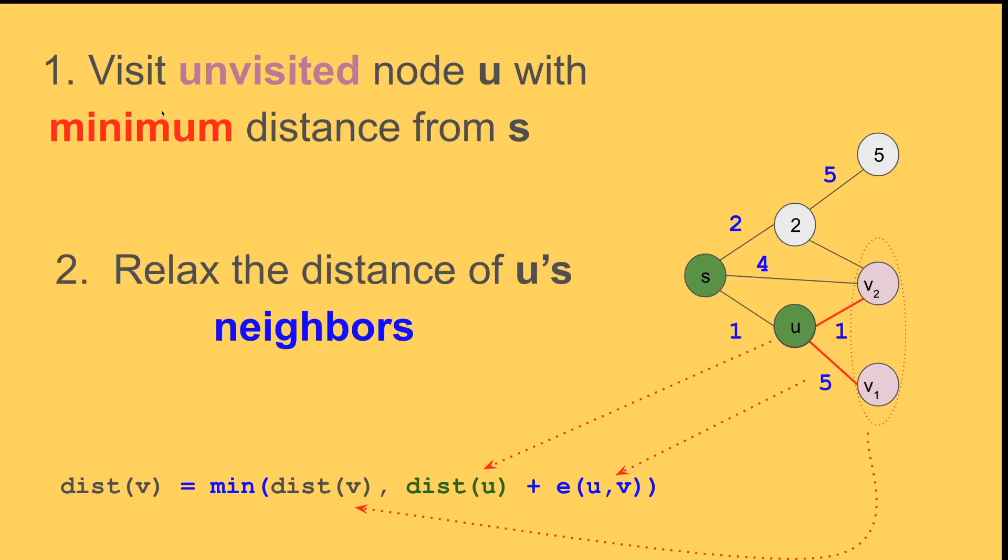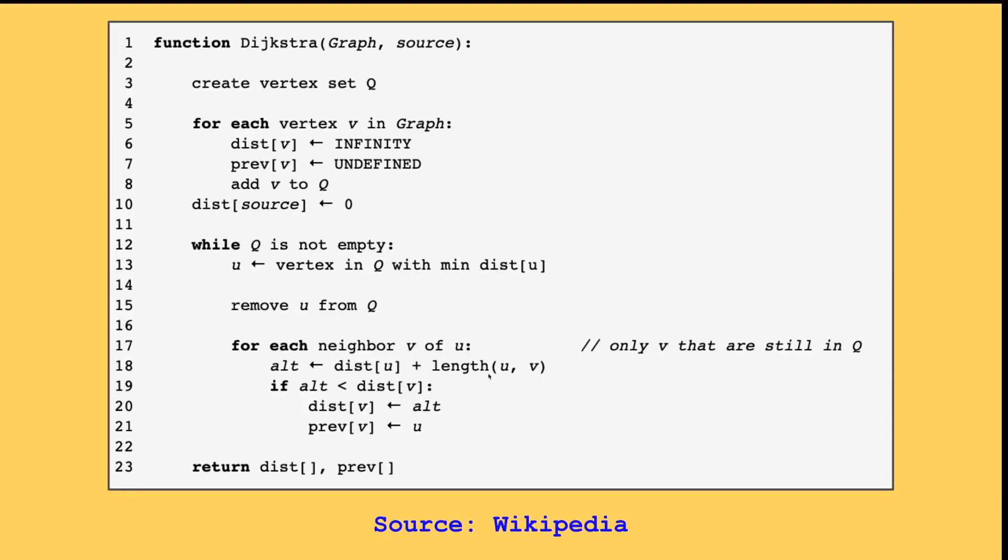All right, moving on, I want to summarize this one last time. There are two major steps that we keep repeating. You visit an unvisited node u with minimum distance from s, and then you relax the distance of u's neighbors, and only the ones that are not visited. So in this case, u's neighbors are v1 and v2 that are not visited. We don't check the node that is visited. And then we update these neighbors' distances based on this general formula. And that's it.